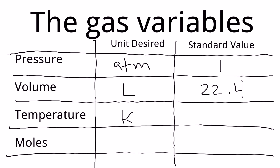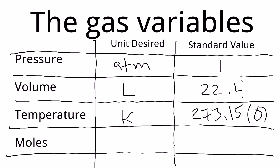The temperature unit we use when talking about gases is Kelvin, represented with a K. We've touched on Kelvin briefly in other lectures but have mostly stayed with Celsius. The standard temperature in Kelvin is 273.15, which corresponds to zero degrees Celsius. To convert Celsius to Kelvin, you add 273.15. So the standard value for temperature is 273.15 K, or zero degrees Celsius.